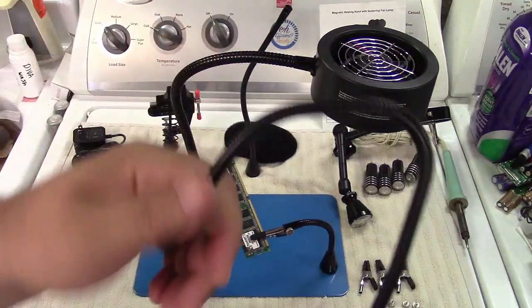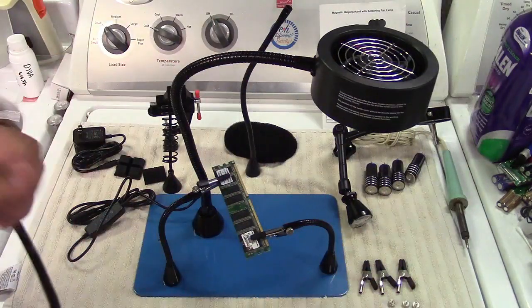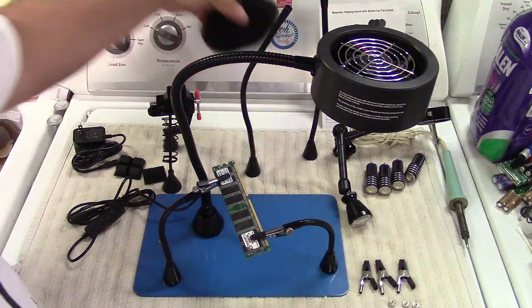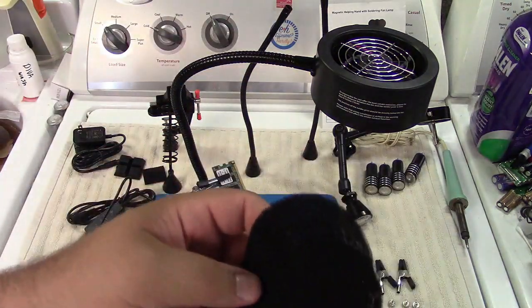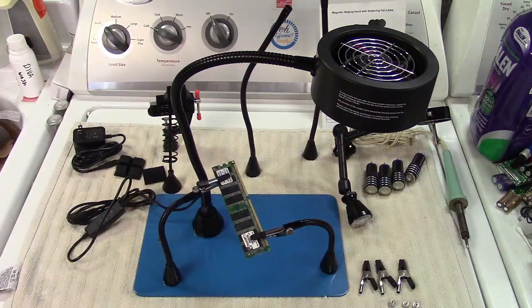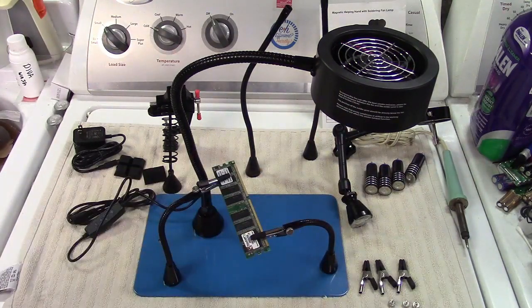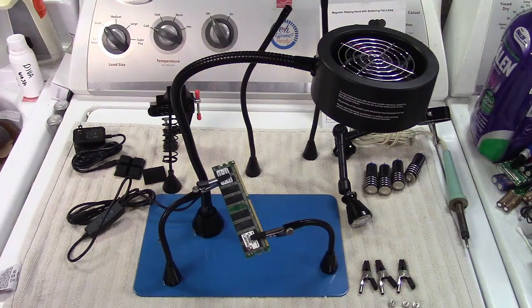And of course you get two more of these right over here that are longer. And again, gooseneck just like that. So you can do that. And they give you three replacement filters for the solder fume extractor. Let me go ahead, put all of this together, and then we'll go ahead and solder something with it.